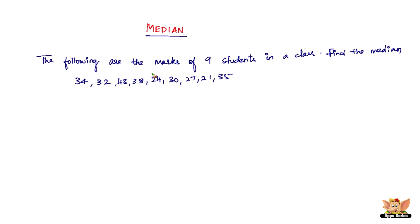The median is nothing but the middle value of a distribution. This is a distribution of the marks of nine students in the class. It is going to show you the average marks. Mean was one way of showing the average, the middle value. This is another way of showing it.